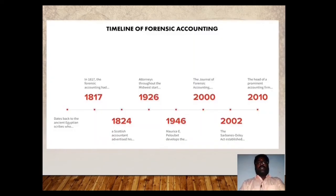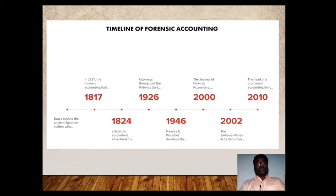This is the timeline of Forensic Accounting. Early Forensic Accounting dates back to the ancient Egyptian scribes who accounted for the pharaoh's assets and were known as the eyes and ears of the pharaoh. In 1817, Forensic Accounting had its first day in court when an accountant was required to testify at a bankruptcy hearing. In 1824, a Scottish accountant advertised his legal accounting expertise.